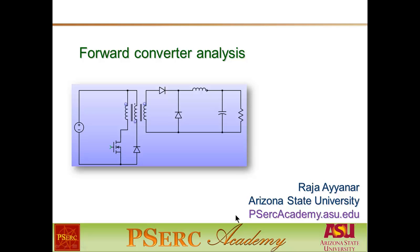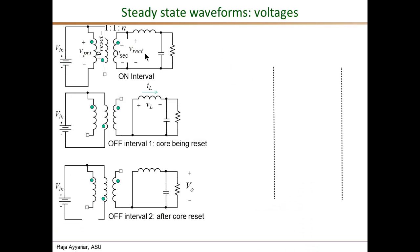In part one we looked at the basic operating principles of a forward converter and the equivalent circuits valid in different operating intervals. In this video we will look in detail at the various current, voltage, and flux waveforms that we see during the steady state operation of a forward converter. These are the three equivalent circuits: one during the on interval, and the two separate off intervals.